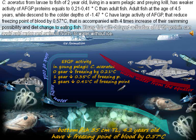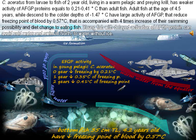Aceratus from larvae to fish of 2 years old, living in warm pelagic water and preying on krill, has weaker activity of AFGP proteins — 0.21 to 0.41°C — than adult fish. Adult fish at age 4.5 years descend to colder depths of −1.47°C with large activity of AFGP, reducing the freezing point of blood by 0.57°C. This is accompanied by a 4-times increase in swimming capacity and a diet change to eating fish.